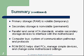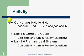ROM BIOS helps start the PC, manage simple devices, and change some motherboard settings. For our activity, we're going to do some conversion of megahertz to gigahertz. For example, 5,000 megahertz equals 5 gigahertz, or 5 billion hertz. So instead of writing out 5 billion hertz, we can represent it as 5,000 megahertz, or even shorter, 5 gigahertz. These symbols really help us take very large numbers and represent them more easily.